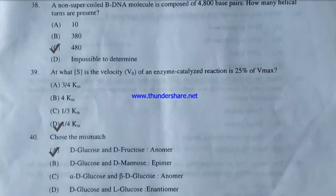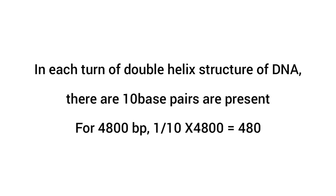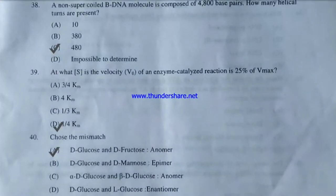A non-supercoiled B-DNA molecule is composed of 4800 base pairs. How many helical turns are present — 10, 380, 480, or impossible to determine? In each turn of the DNA double helix there are 10 base pairs. So the number of turns = (1/10) × 4800 = 480. The answer is C — 480 helical turns.